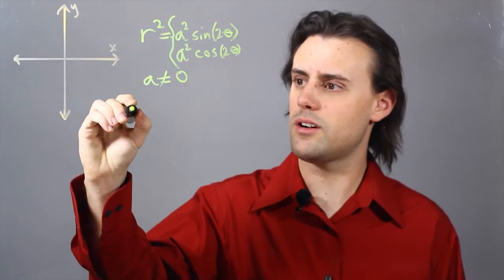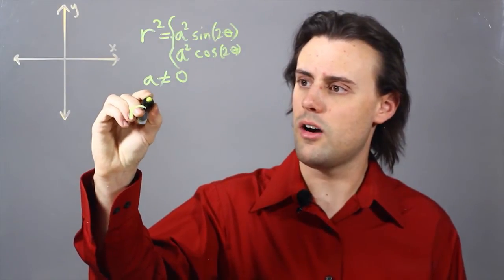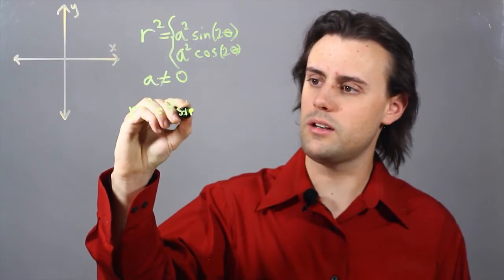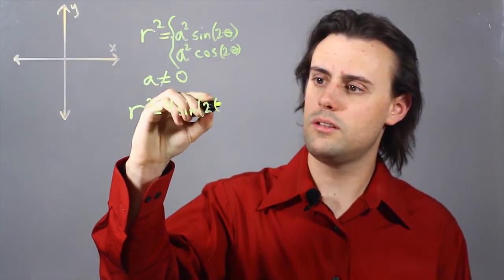So, as an example, we can consider the Lemniscate r squared is equal to 4 times sine of 2t.